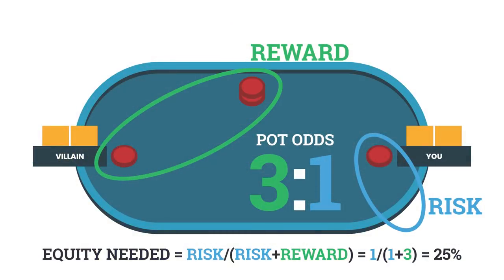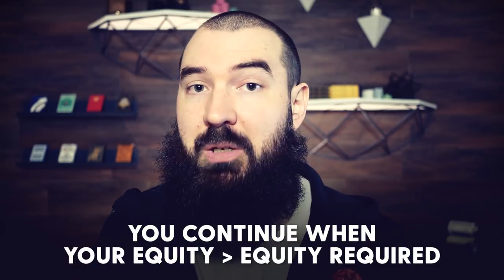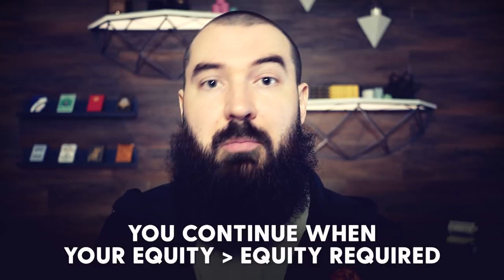Taking the example of three to one, the way you figure out your equity requirement — how much equity you need to justify continuing — is: risk divided by risk plus reward. Your risk here is one unit, the reward is three. So one divided by one plus three equals 25%. That is your equity requirement. If you have at least 25% equity, you continue. If you don't, consider implied odds, and if not enough of that, just fold. Very simple.